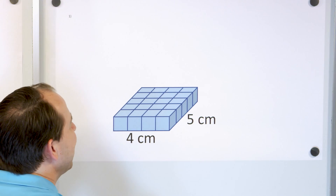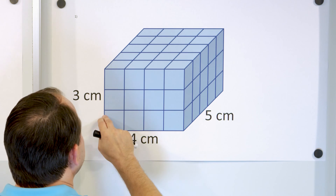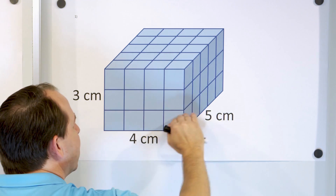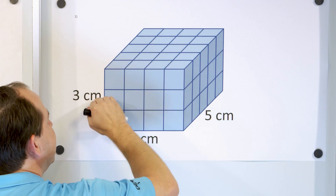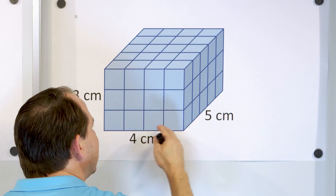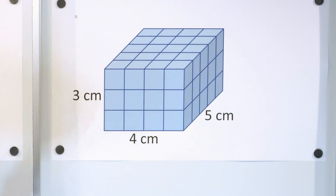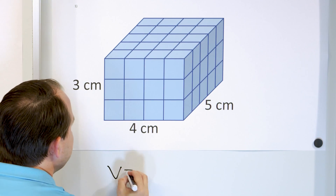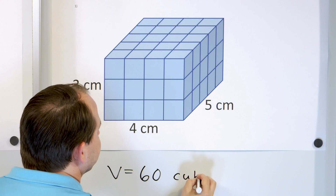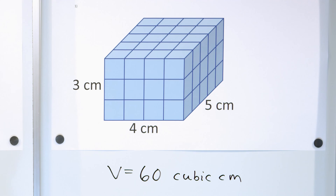Now, how many are in the total thing? We have 20 on the first layer, and there are three centimeters tall, so there must be three layers of cubes. So there's 20, then another 20, then another 20. Counting by 20: 20, 40, 60. So the volume — how many cubes fit in there — is 60 cubic centimeters.